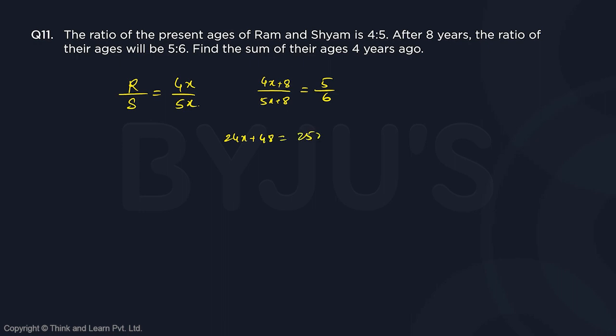To 25x plus 40, and this gives you x equal to 8. So the ages are 8 times 4 is 32 for Ram and Shyam which is 5x is 40. Find the sum of the ages 4 years ago. Four years, Ram...